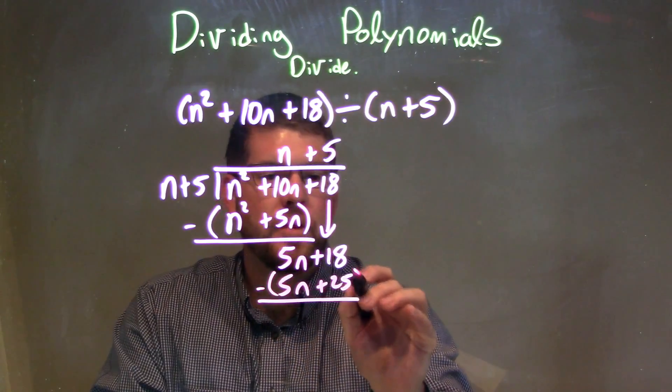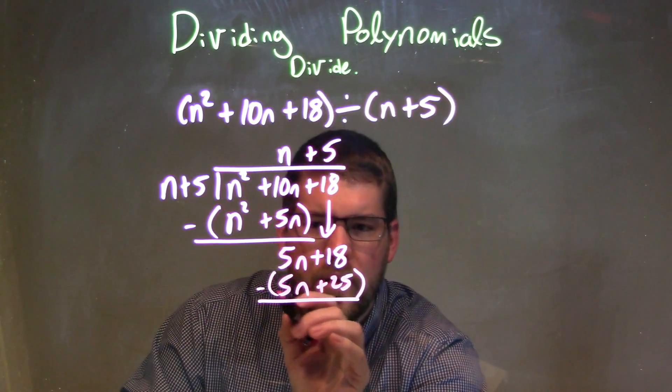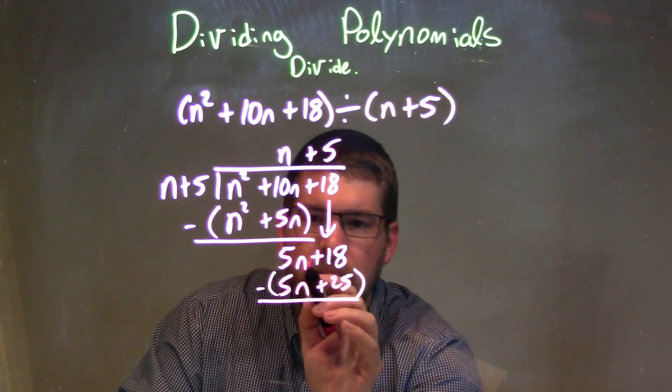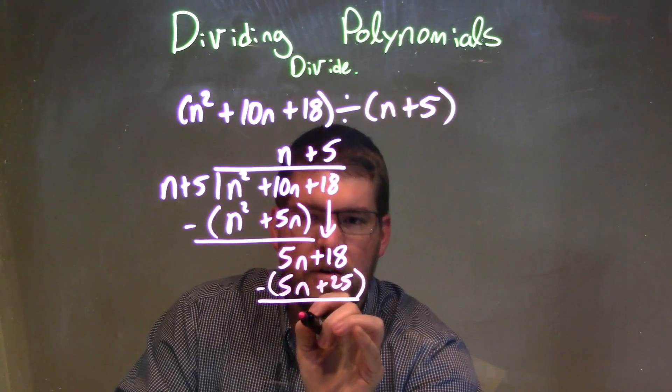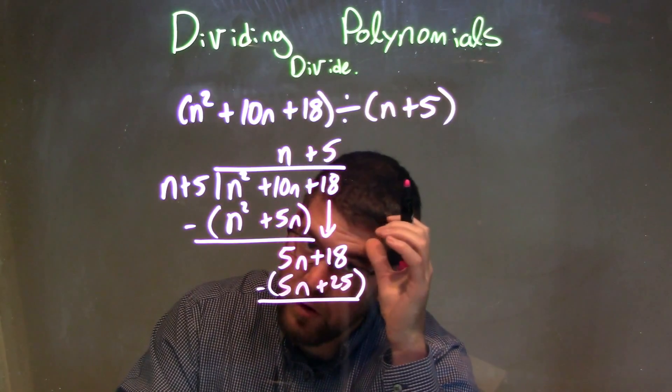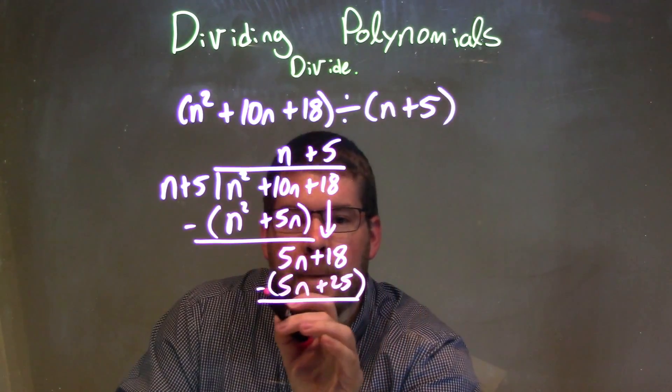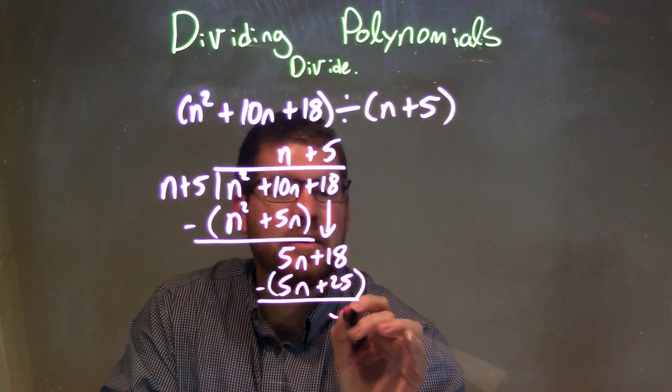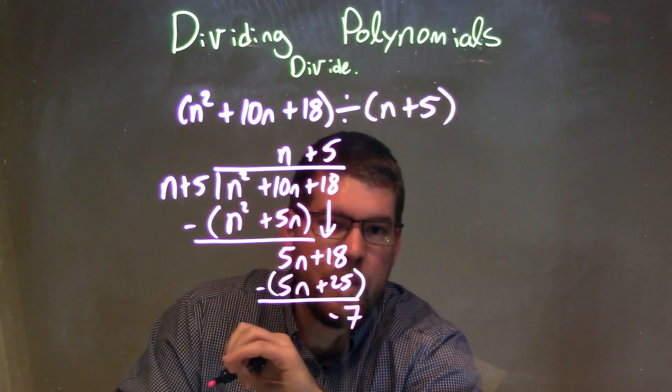We subtract the 2, right? Make sure you're, I usually like to bring parentheses there to show that I'm distributed to all parts here. 5n minus 5 is just 0 and it should. It should eliminate there. That's the whole goal of it. And 18 minus 25 is just negative 7.